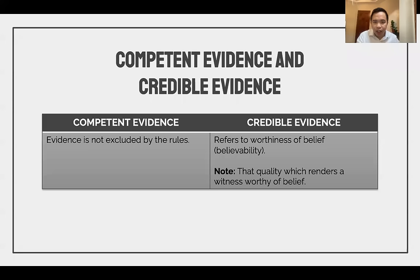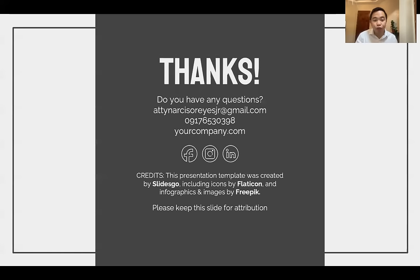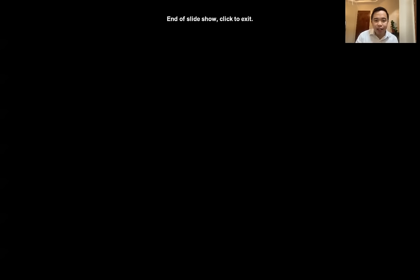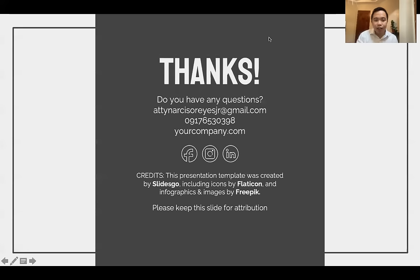Competent evidence and credible evidence: a competent evidence is evidence which is not excluded by the rules, while a credible evidence refers to the worthiness of belief or believability — the credibility of a witness. This ends our presentation on Rule 128. I'll see you again next meeting. Thank you and have a nice day.